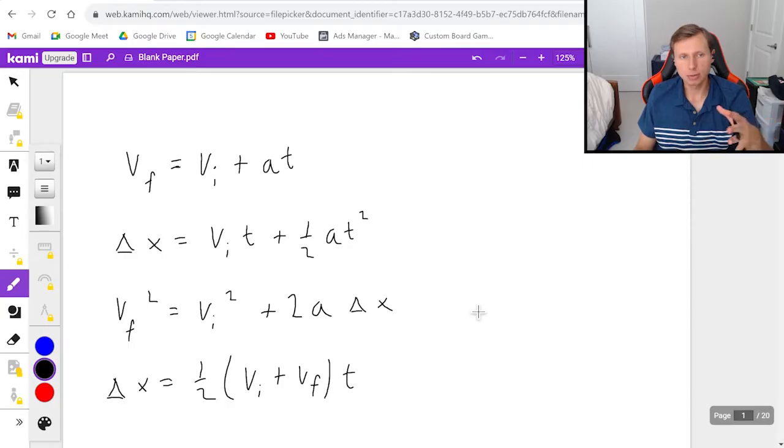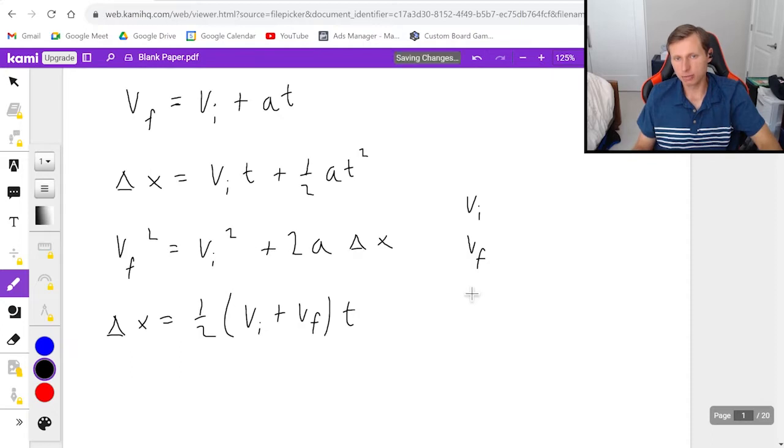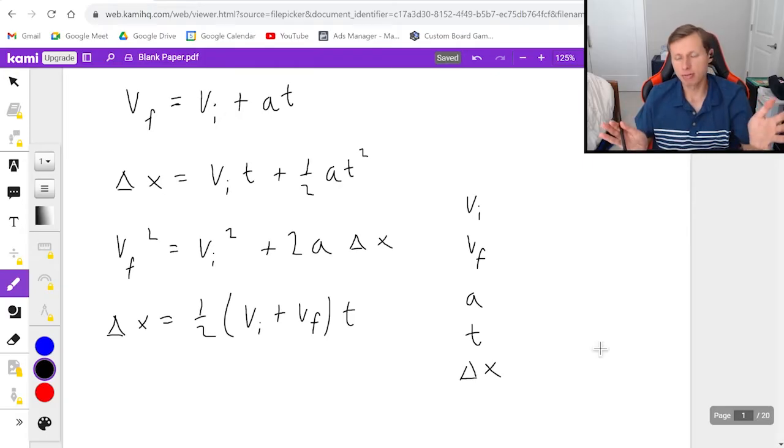And my strategy typically for kinematics problems is I like to write out the five kinematic variables: v initial, v final, acceleration, time, and displacement. And the goal is to have three of the five of those. If I have three of the five, then that means I can plug into one of the four on the left and we can solve the problem that way.